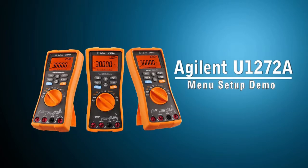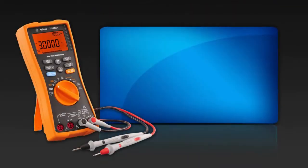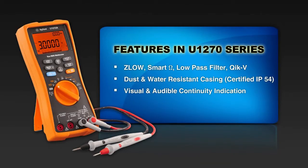Welcome to the Agilent U1272A handheld DMM setup menu demonstration video. In this video, we will show you how to change a number of non-volatile preset features in the U1270 series. Modifying these settings affects the general operation of your multimeter across several functions.